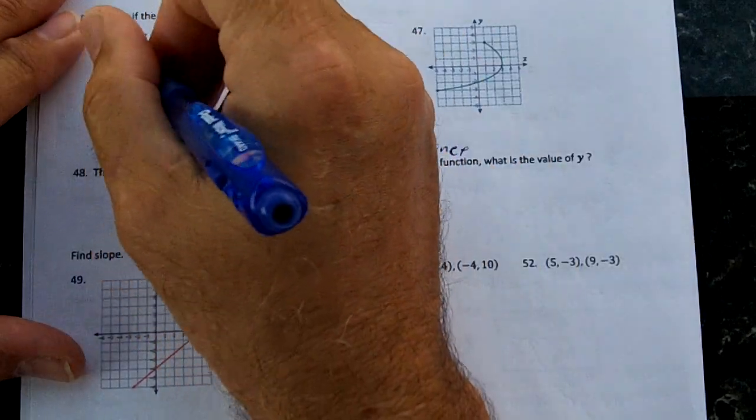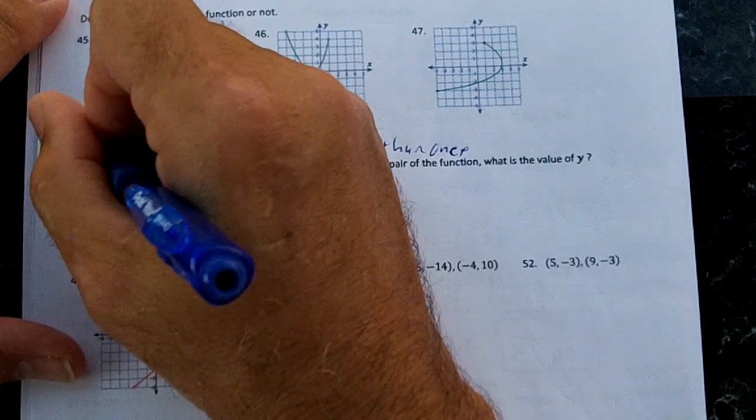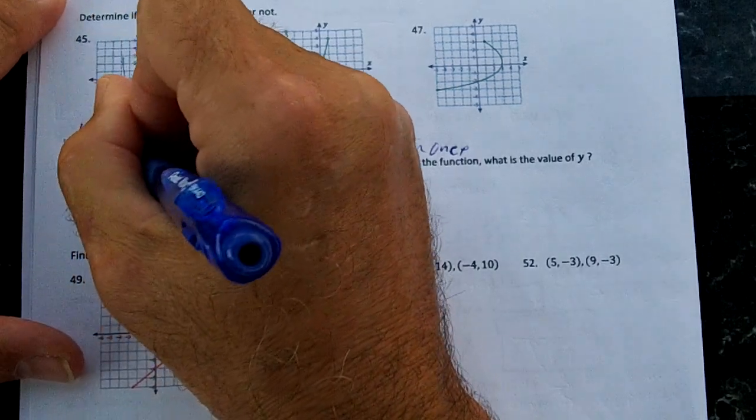So right here, a vertical line anywhere on the graph would only cross once. Check. Function.